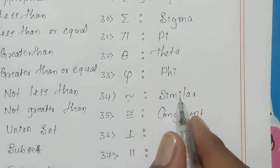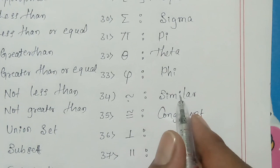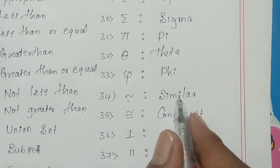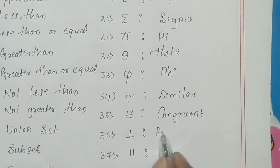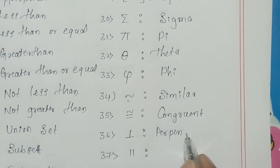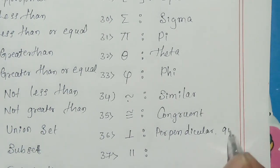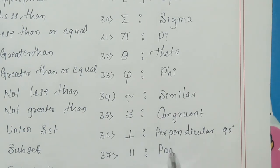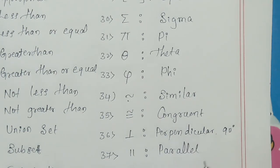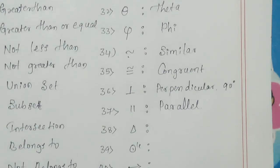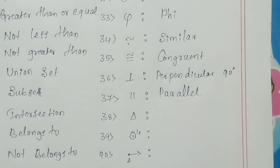This is perpendicular. Perpendicular means 90 degrees. So this is parallel. Parallel means lines do not intercept at any point, is called parallel lines.